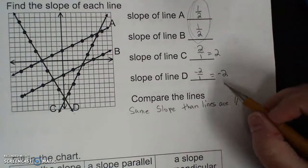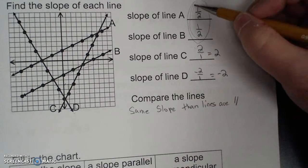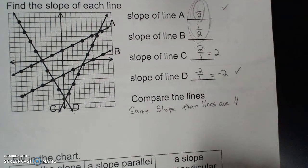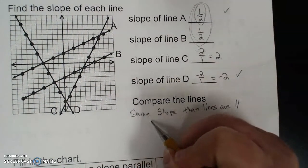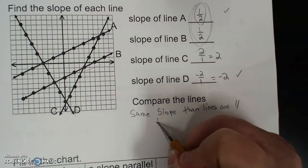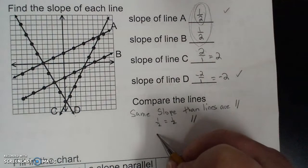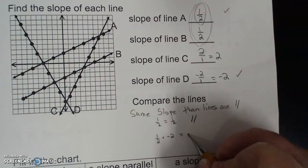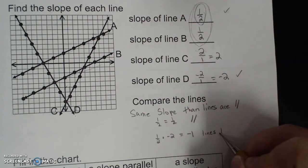If you look at A and D, I take slope of A which is 1 half, and the slope of D which is negative 2. If I take 1 half times negative 2 and I get negative 1, then the lines are perpendicular.